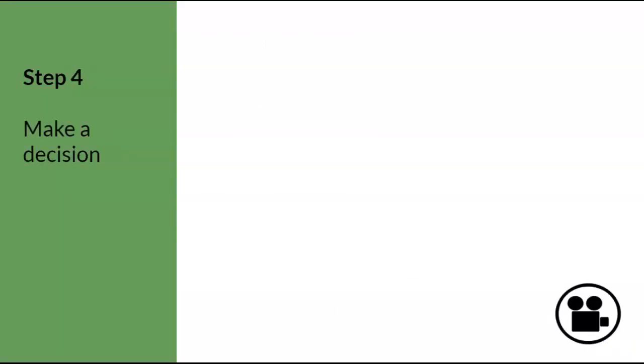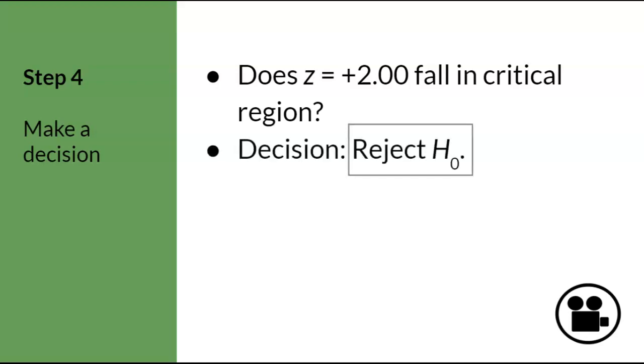Step 4. Now we need to compare the sample Z-score that we calculated in step 3 to the population prediction which we determined in step 2. In other words, does the Z of plus 2 fall in the critical region Z from step 2? Well, since plus 2 is above the mean in the tail, past the critical region Z of a plus 1.96, the answer is yes, and the decision is to reject the null hypothesis. The box indicates the final answer that I will be looking for on problem sets and exams.